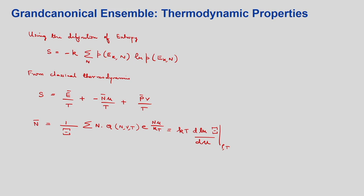The average number of particles N̄ for the grand canonical ensemble is given by N̄ = kT × (∂ ln Ξ/∂μ)_{V,T}. This is because N̄ = Σ_N Σ_k N × e^(N μ/kT) × e^(−E_k/kT) / Ξ. If you take the ln of the partition function and then take the derivative with respect to μ, you will get this expression kT × (∂ ln Ξ/∂μ). This is one of the terms — the average number of molecules.